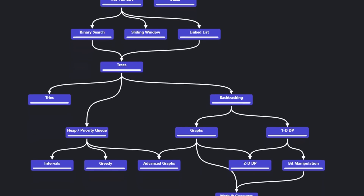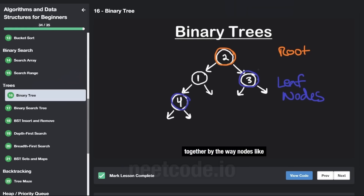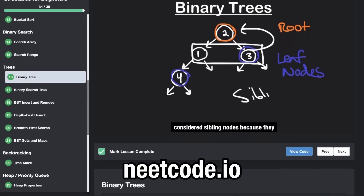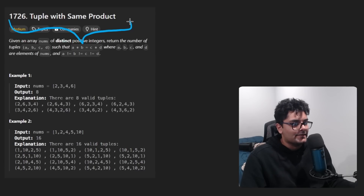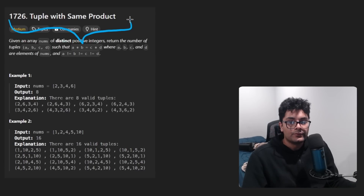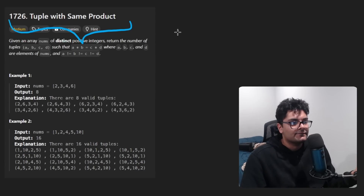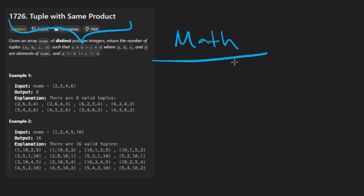Hey everyone, welcome back and let's write some more neat code today. So today let's solve the problem 'Tuple with the Same Product.' I really like this problem because it involves a decent amount of math. Don't worry — when I say math, I don't mean formulas you have to memorize. It's going to involve some mathematical thinking, so let me walk you through that right now.